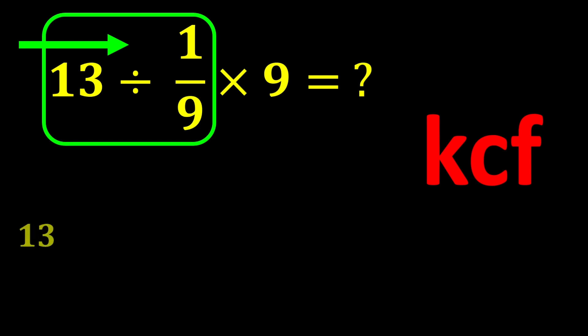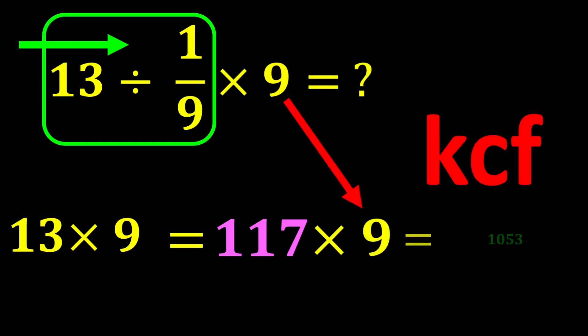Therefore, we keep 13 as it is, change the division sign to multiplication, and flip 1 over 9. 13 multiplied by 9 equals 117. And finally, 117 multiplied by 9 gives us 1053, which is our final answer.